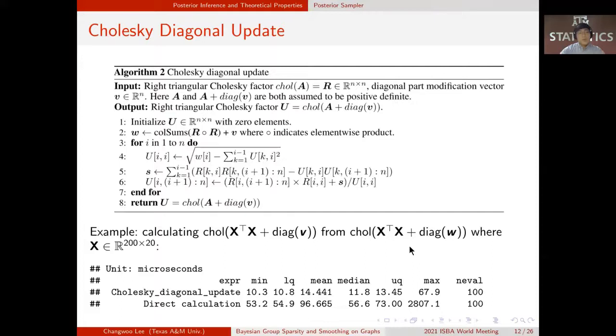So this is a description of the Cholesky diagonal update, which is useful when repeatedly updating the Cholesky factor where only diagonal element changes. In our example, Cholesky term involves Gram matrix X transpose X, and you can see that diagonal update improves the computation speed significantly.